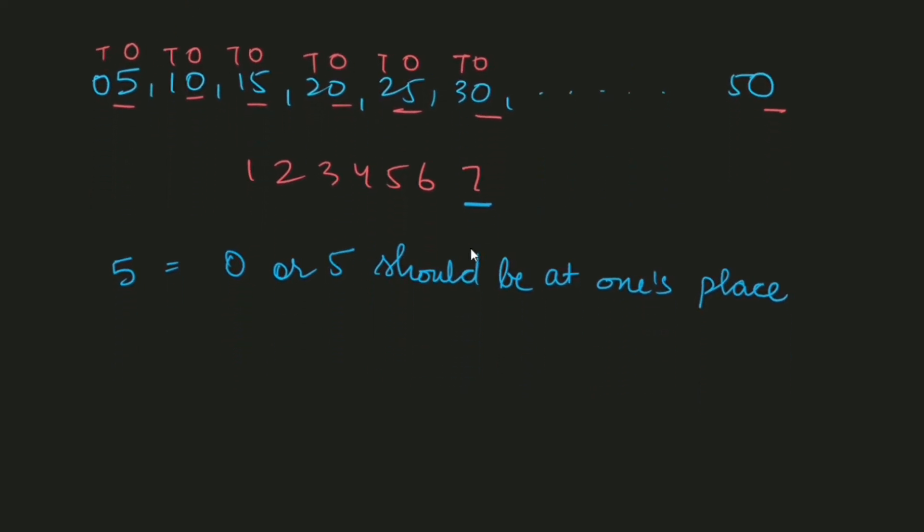If I have this number 1, 2, 3, 4, 5, 0, then this number can be divided by 5. Yes, this number can be divided by 5 because one's place is 0.